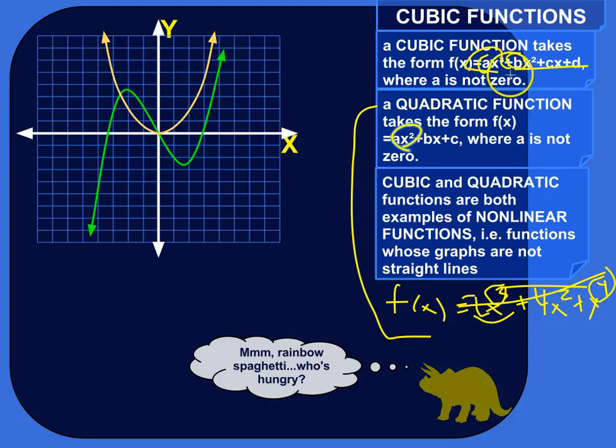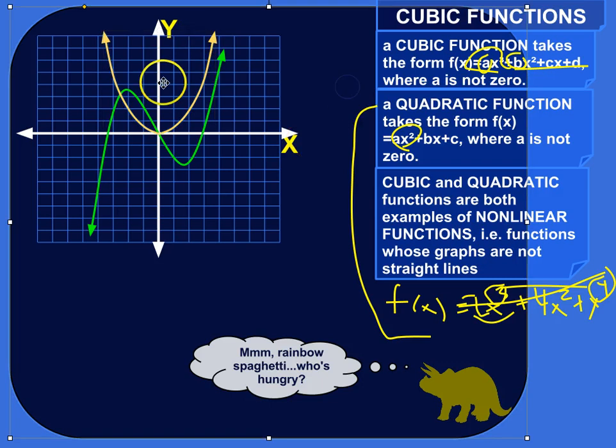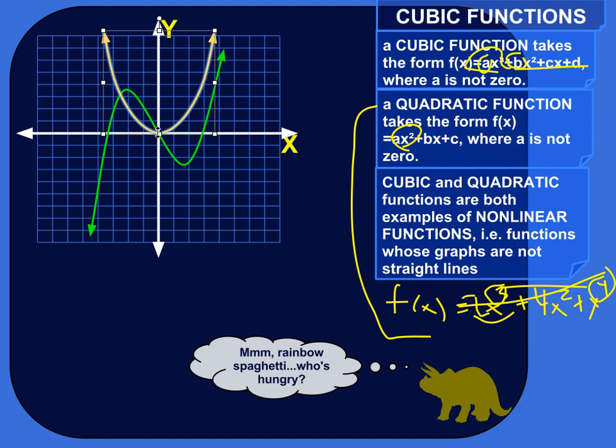And then these differences in the equation turn into some interesting differences on the graph. So this guy, the parabola, is a quadratic function. So it has just one nice curve like that, where there's an axis of symmetry that runs through this point down at the bottom called the vertex.